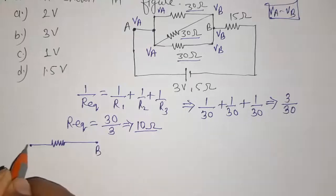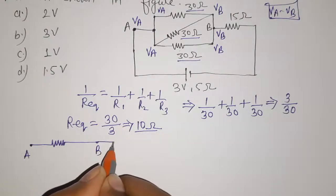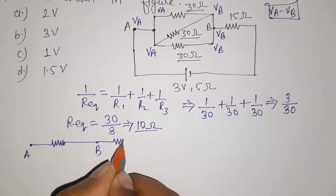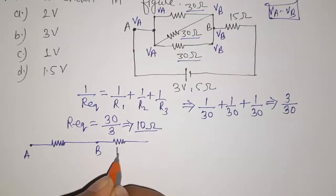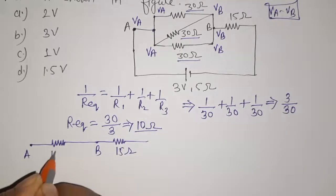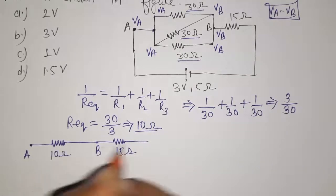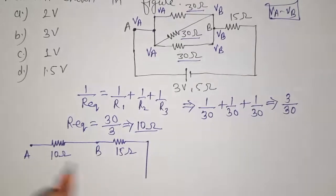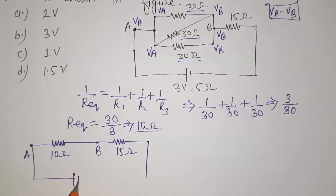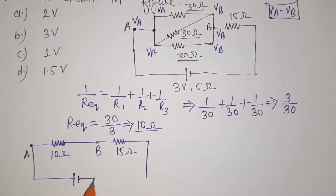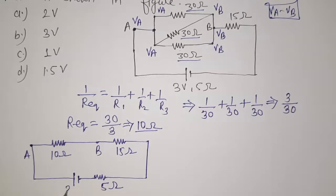In the simplified circuit, we have point B and point A, with a resistance of 15 ohms in series. The equivalent resistance between A and B is 10 ohms. There is also a battery with a potential of 3 volts and an internal resistance of 5 ohms.